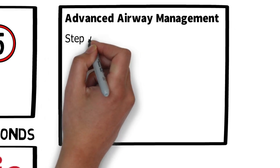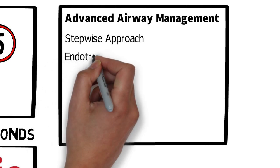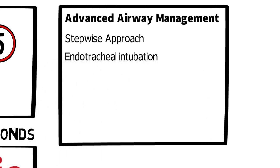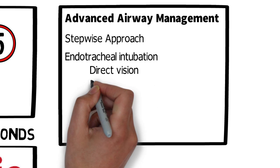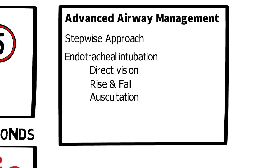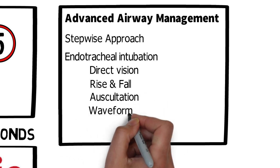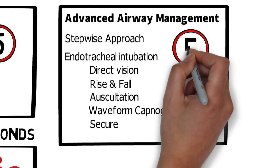Moving on to advanced airway management, some key principles here include a stepwise approach. We're going to start simple with maneuvers like a head tilt chin lift or jaw thrust, moving on to an OPA then considering an NPA, iGel, or endotracheal intubation where appropriate. For endotracheal intubation we'll be looking for the tube inserted under direct vision, rise and fall of the chest, bilateral auscultation and over the epigastric region, waveform capnography, and the tube secured — with no interruption of CPR longer than five seconds.